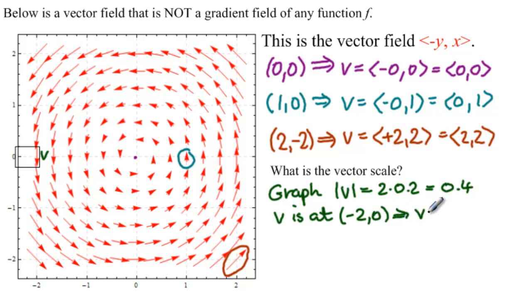So v equals <0, -2>. And you can see that it is that. It's got 0 x component and -2 y component. So the actual magnitude of v is equal to 2.